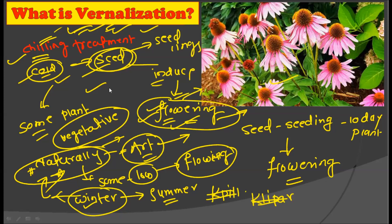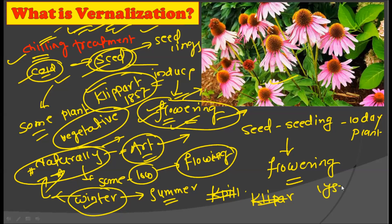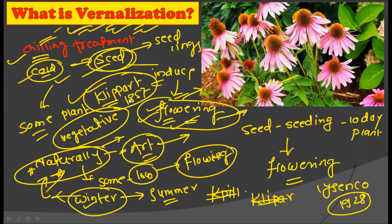This vernalization phenomenon was first observed by Klipart in 1857, but the name 'vernalization' was given by Lysenko in 1928. You have to remember these dates: vernalization was first observed by Klipart in 1857, but the name was given by Lysenko in 1928.